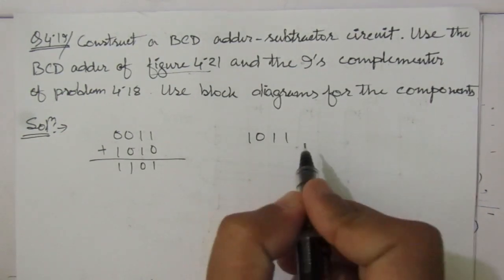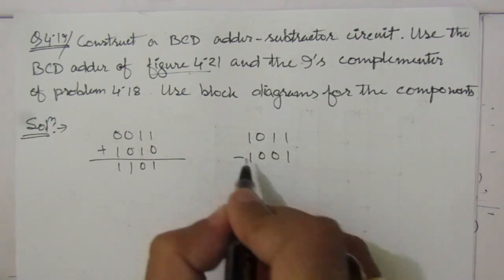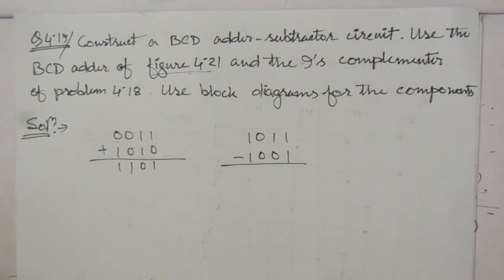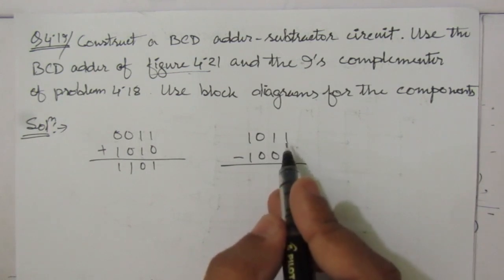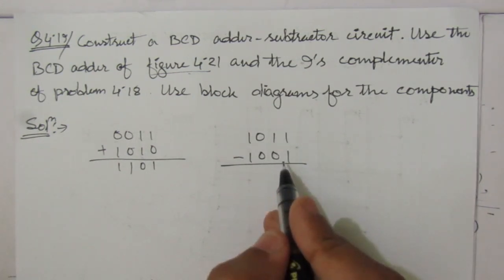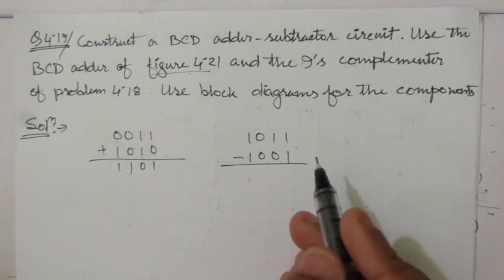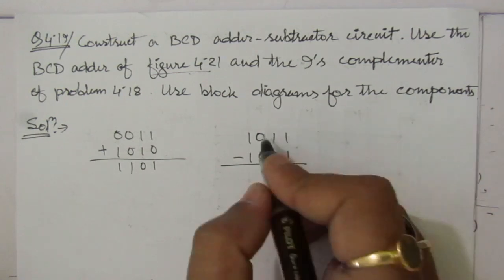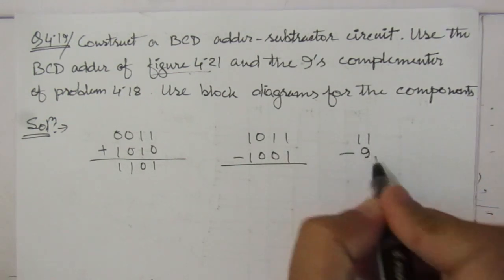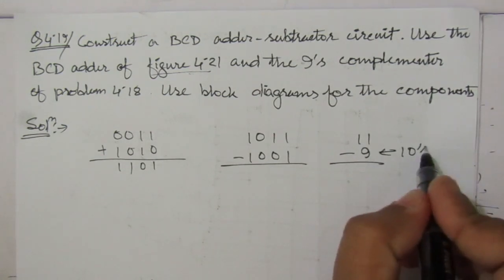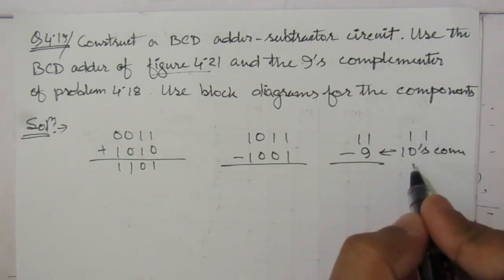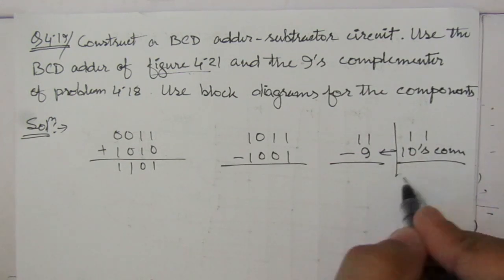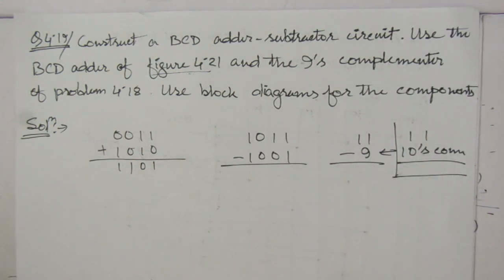For subtraction, for example 1011 minus 1001 (that is 11 minus 9), we cannot directly subtract in a digital circuit. We need to find the 10's complement. The 10's complement is obtained by finding the 9th complement and adding 1. We add this 10's complement to 11, and the result gives us the subtraction value — in this case, 0010 which equals 2.